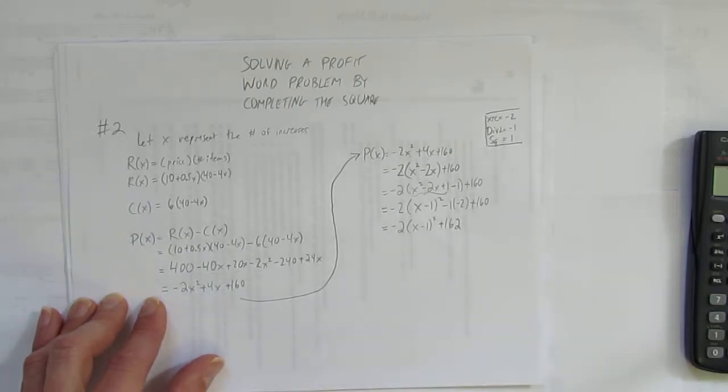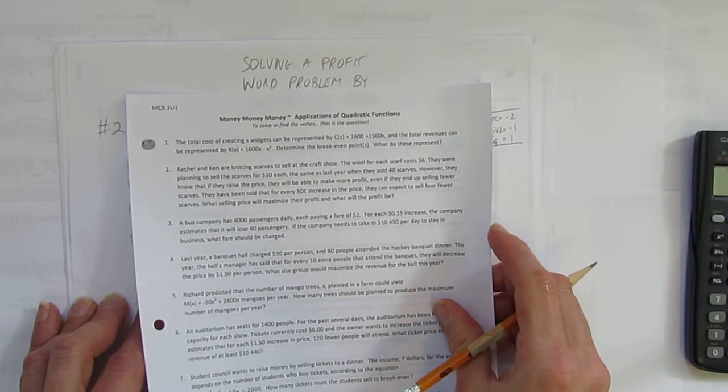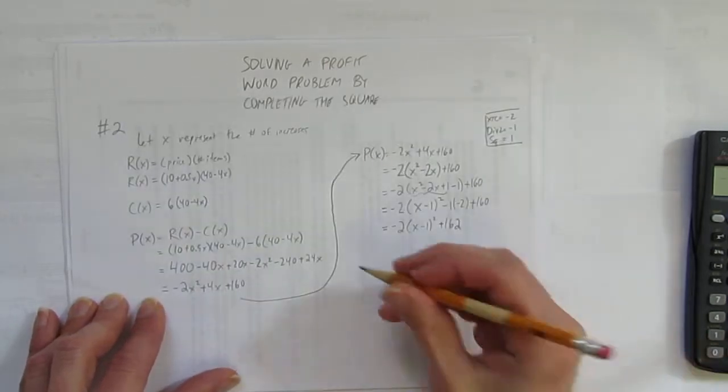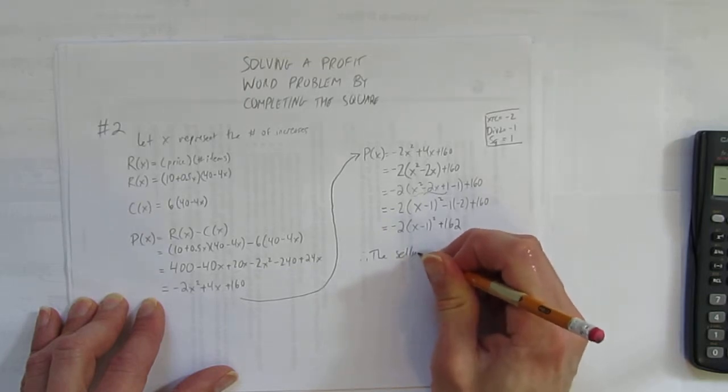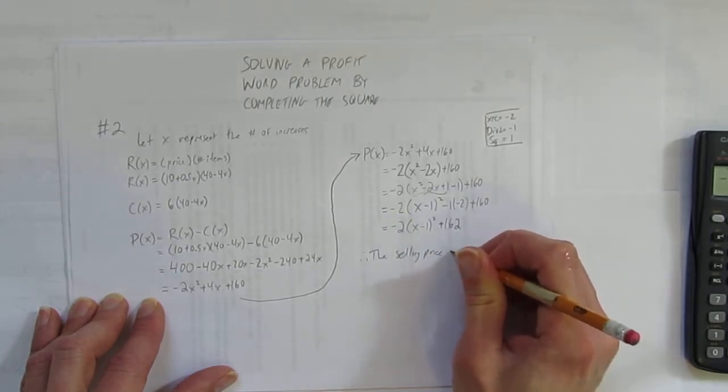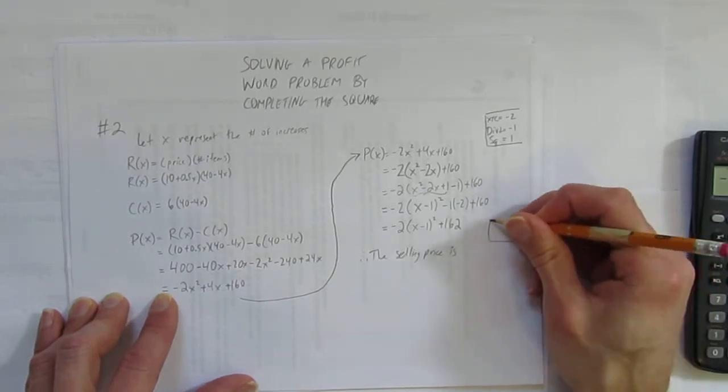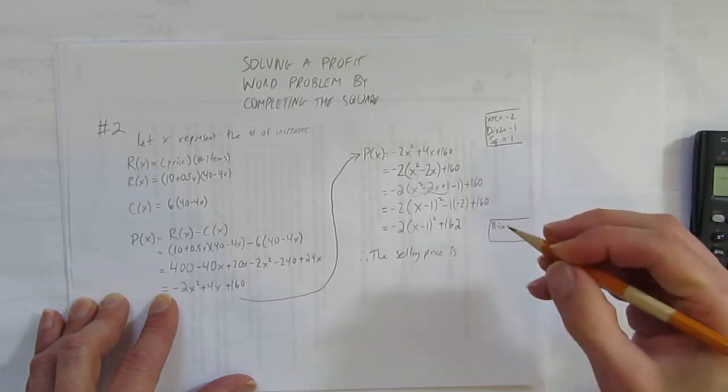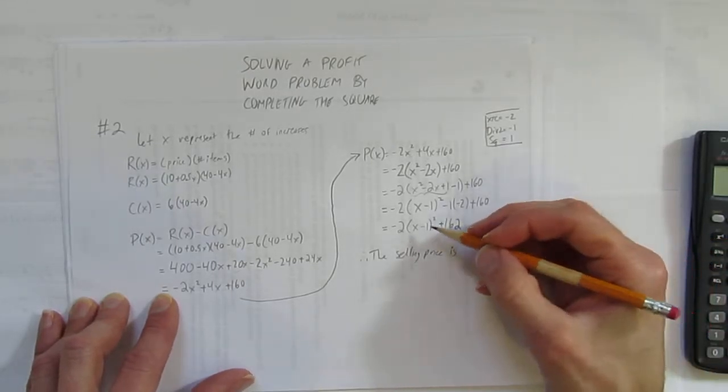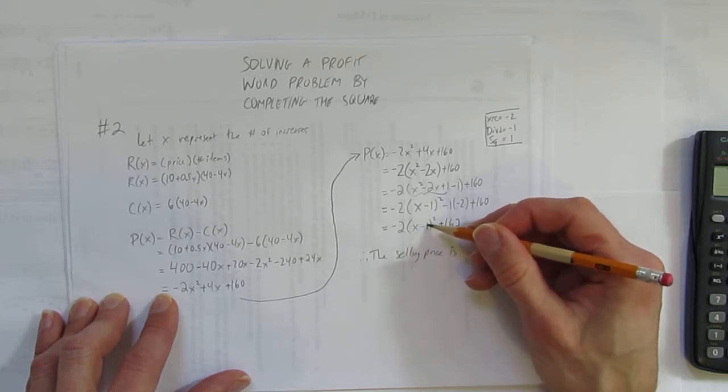And now I can see what I'm looking for. The question asked me, what is the selling price that will maximize their profit? Therefore, the selling price is... You know, maybe we should show a little bit of work here, just to make sure you understand where I'm getting this from. I'm going to calculate their selling price by looking at the vertex. The vertex here is 1. Flip this x value, this h value for x. You always flip.